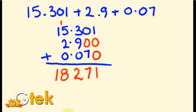The decimal should be in the same line. That is 18.271. This is the way you have to add decimal numbers. Thank you.